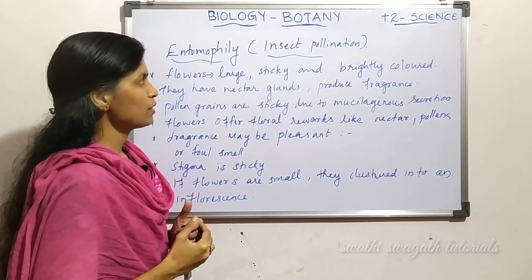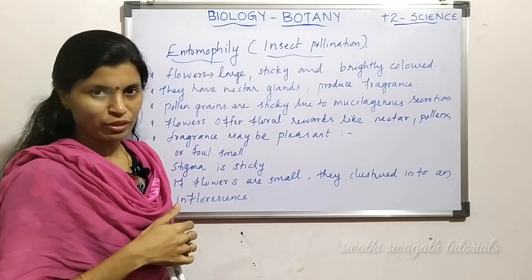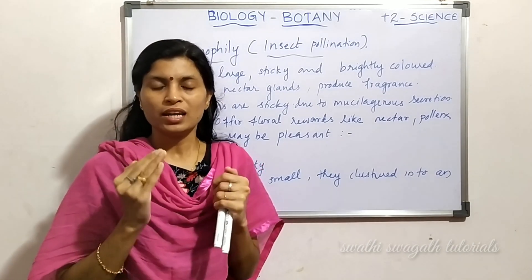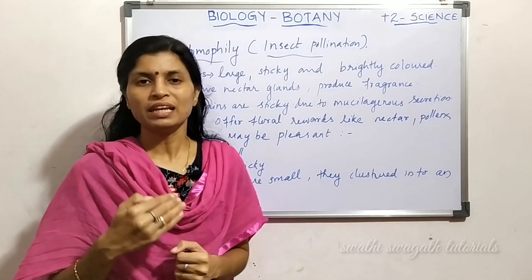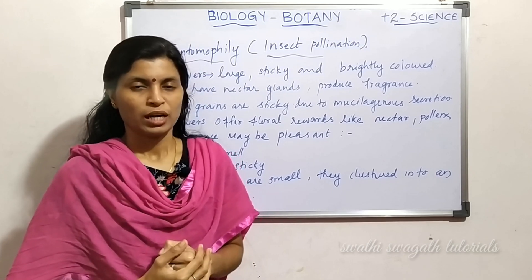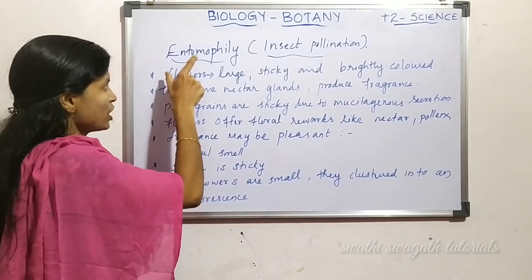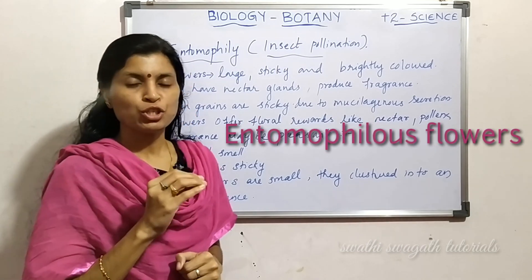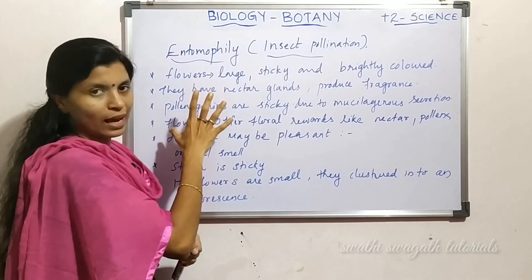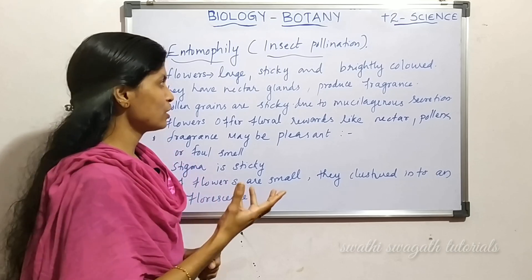Entomophily is insect pollination, a biotic agent. These are the characters of entomophilous flowers, which are attracted to living pollinating agents. Entomophilous flowers are larger in size — this is the large size character.